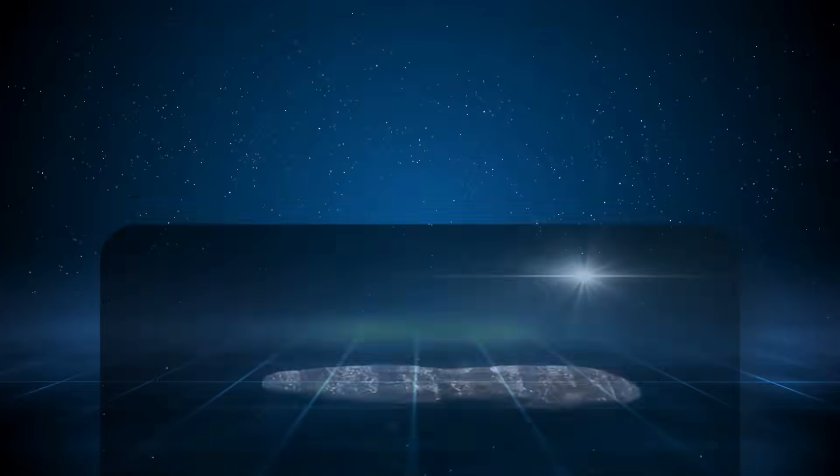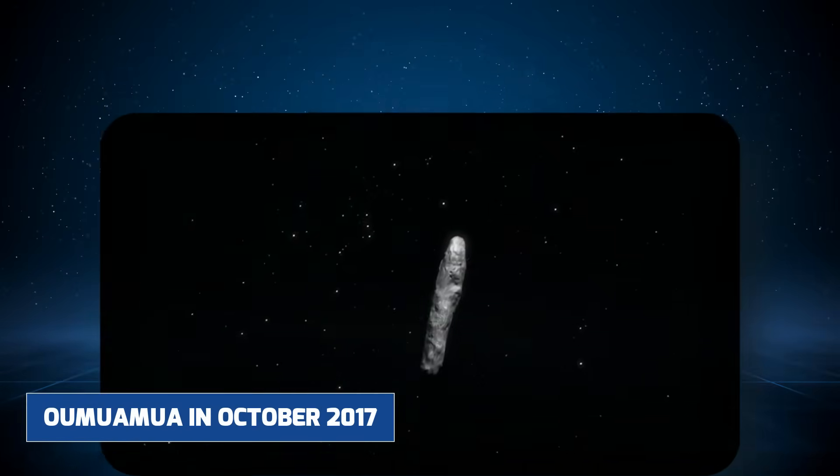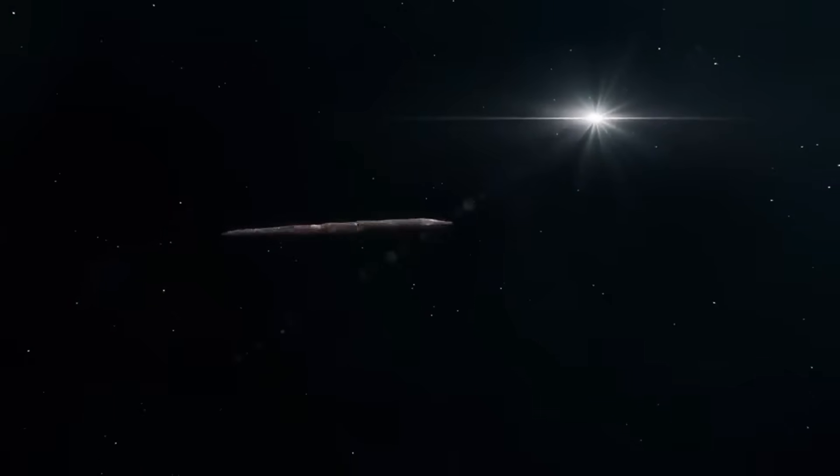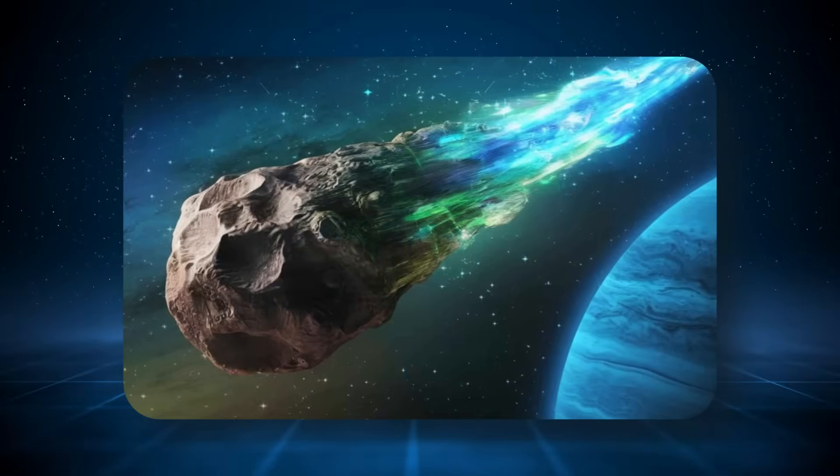Oumuamua, which is an object that we detected in space that you believe could possibly have been extraterrestrial. When astronomers first detected Oumuamua in October 2017, the object defied explanation. Hurtling through our solar system at unprecedented speed, it didn't behave like any comet or asteroid known to science.